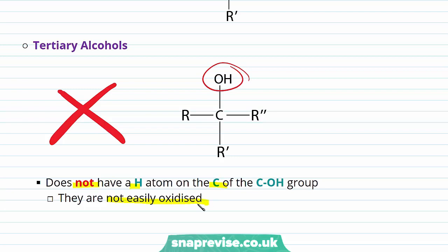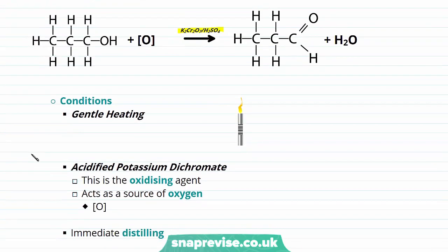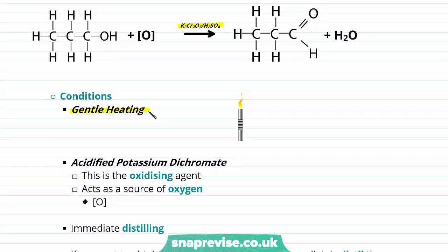It's not to say that our tertiary alcohols cannot be oxidized; it's just that they're not easily oxidized. So let's take a look at the oxidation of our primary and secondary alcohols. Our primary alcohols can be easily oxidized — they can be partially oxidized to form an aldehyde or completely oxidized to form a carboxylic acid. Here you can see the reaction of propan-1-ol, our primary alcohol, to form an aldehyde. There are specific conditions required for this reaction, including the use of acidified potassium dichromate. The first is this reaction requires gentle heating, and our primary alcohol must be heated with acidified potassium dichromate, our oxidizing agent.